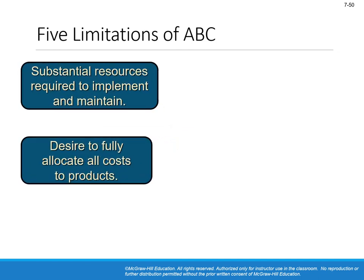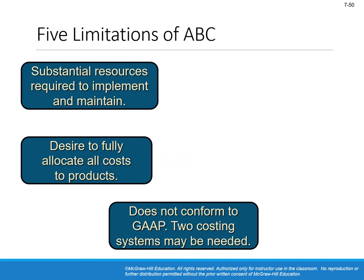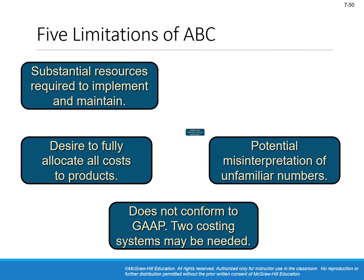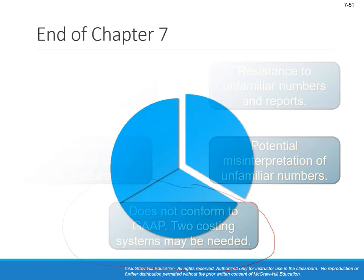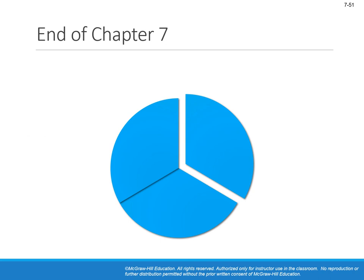One limitation of the ABC system is that it does not conform to GAAP — the generally accepted accounting principles used in the United States and many other countries. That's the whole chapter. Thank you for listening, and please don't hesitate to email me if you have any questions about the material.